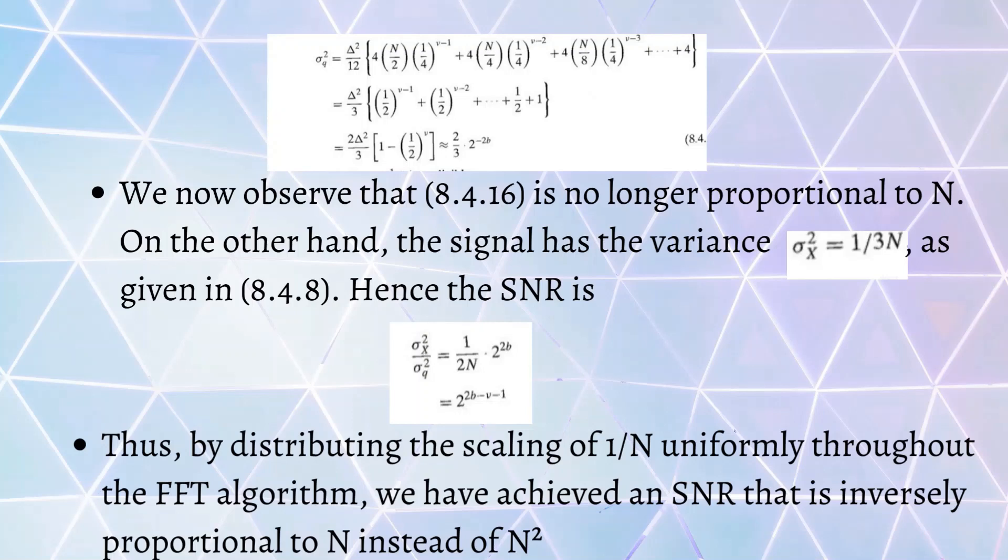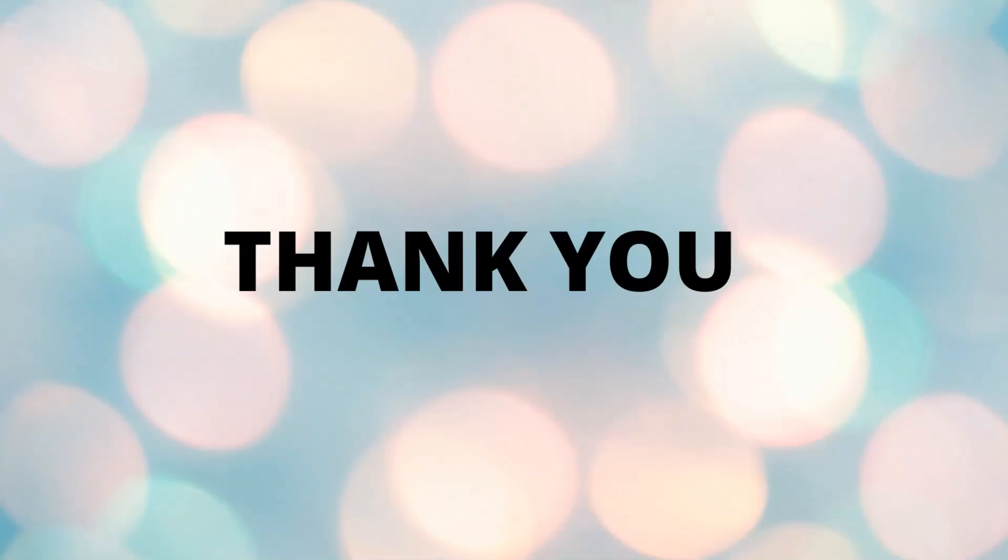Thus, by distributing the scaling of 1/N uniformly throughout the FFT algorithm, we can achieve a signal-to-noise ratio that is inversely proportional to N instead of N². This N² would be in the case of direct calculation of DFT, but in case of FFT algorithm we will be getting signal-to-noise ratio that is inversely proportional to N. Thank you.